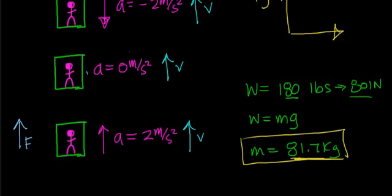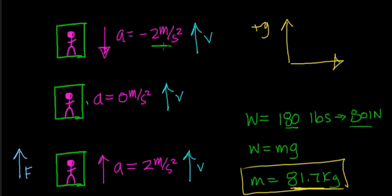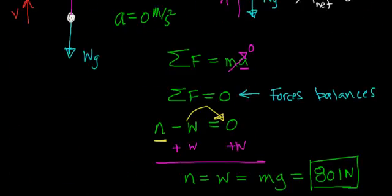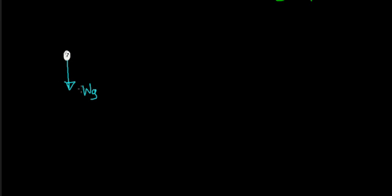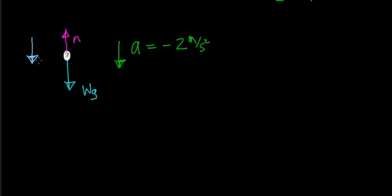Now let's look at the other case: the elevator is going to start to slow down or decelerate, and the acceleration is going to be non-zero. We draw a free body diagram — the force of gravity is still acting on this person in the downward direction, there is a normal force due to the floor pushing up, and now you are accelerating but slowing down, so your acceleration is in the downward direction. We said the elevator is slowing down at a rate of 2 meters per second squared. There is a net external force acting on this person causing them to slow down. This person has some velocity in the upward direction, and in order to slow them down, there must be a net force acting on that person.